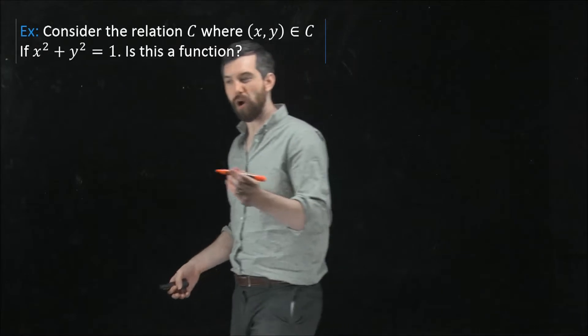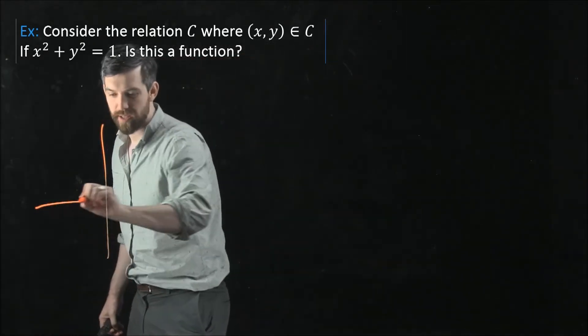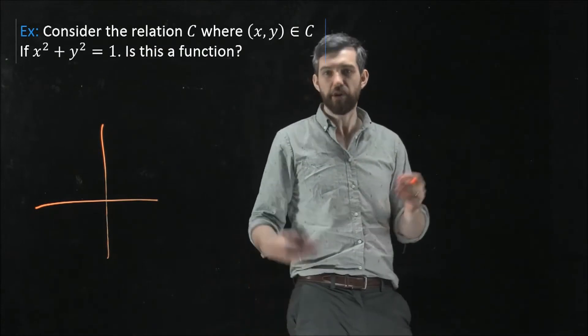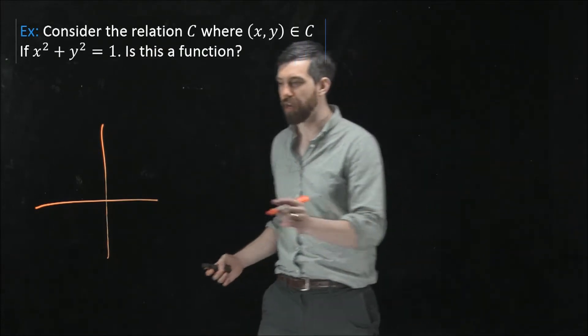Now here's why I called it a circle relation. This equation x squared plus y squared equals 1 is the equation of a circle.